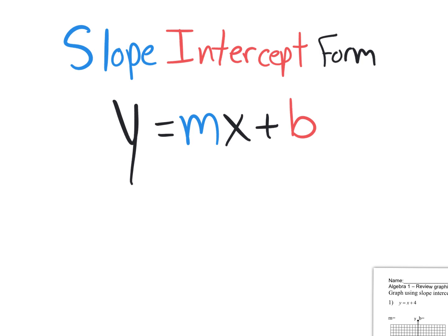So why do we call this slope-intercept form? Because it's organized in a way that you could see the slope right there in front of x, and you could see the y-intercept right there, which is the b value. So in addition to that, you want to write that m is the slope, which is rise over run — it's a fraction, rise over run. And we're always going to look at lines from left to right, which means a positive direction when you're looking at the run.